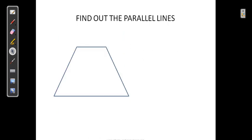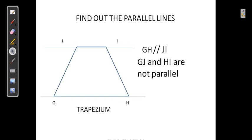Now find the parallel lines in a quadrilateral GHIJ. This quadrilateral has a special name — it is a Trapezium. In a trapezium, we can find only one pair of parallel lines: GH and JI are parallel, so GH ∥ JI. The other two lines GJ and HI are not parallel — they will meet at a point.